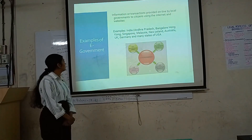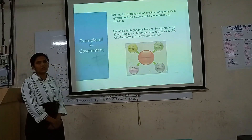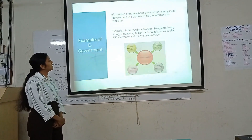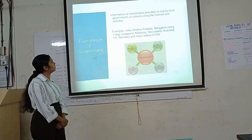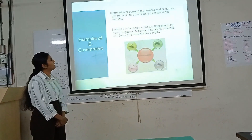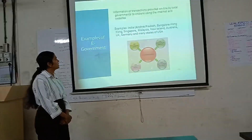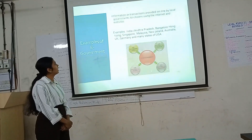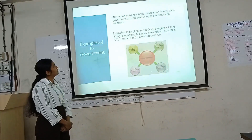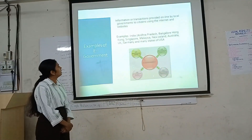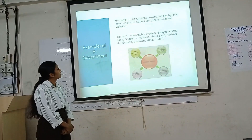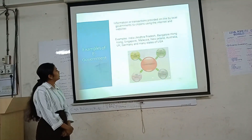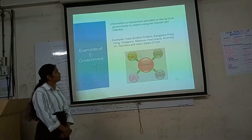So examples of e-government: e-government is actually used for information and transactions provided online by local governments, with citizens using the internet and websites. The places where e-government is active right now include India, especially Bangladesh, Bangalore, and other countries such as Hong Kong, Singapore, Malaysia, and New Zealand.